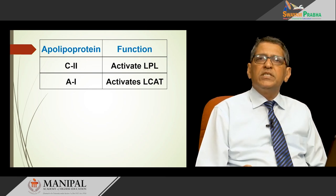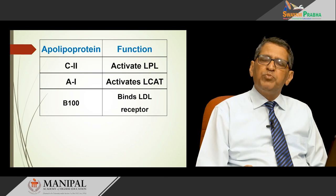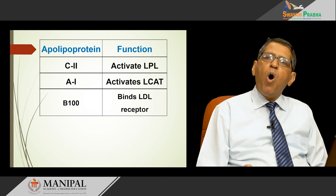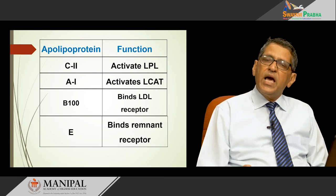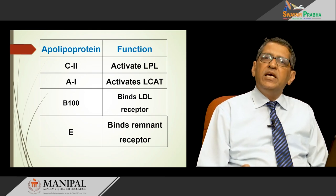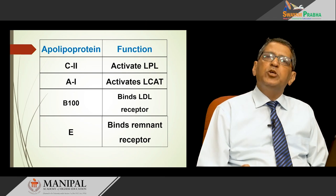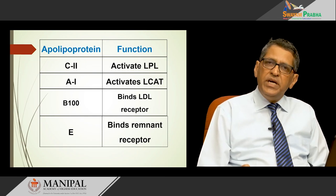Some apoproteins act as ligands. ApoB100, present in VLDL and LDL, helps in binding of remnant VLDL or LDL to the receptor for further metabolism. ApoE, present in different isoforms, helps in binding of chylomicron remnant or VLDL remnant especially to the liver during its metabolic process. Thus ApoB100 and ApoE act as ligands for metabolism.